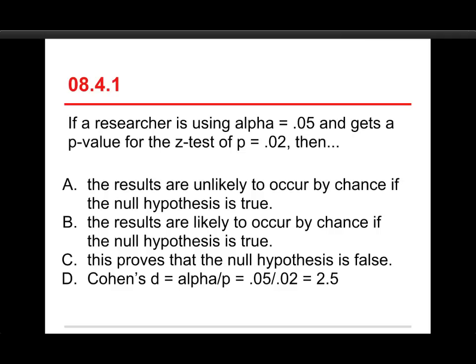The first question on the quiz is, if a researcher is using an alpha of 0.05 and gets a p-value for the z-test of p = 0.02, then: A, the results are unlikely to occur by chance if the null hypothesis is true; B, the results are likely to occur by chance if the null hypothesis is true; C, this proves that the null hypothesis is false; or D, Cohen's d = alpha/p = 0.05/0.02 = 2.5.